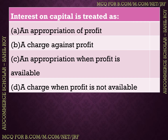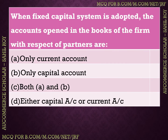The next question: interest on capital is treated as what? Options: (A) an appropriation of profit, (B) a charge against profit, (C) an appropriation when profit is available, (D) a charge when profit is not available. The correct answer is Option C — interest on capital is treated as an appropriation when profit is available, and it is given only when profit exists.